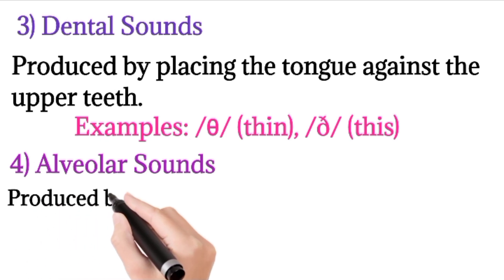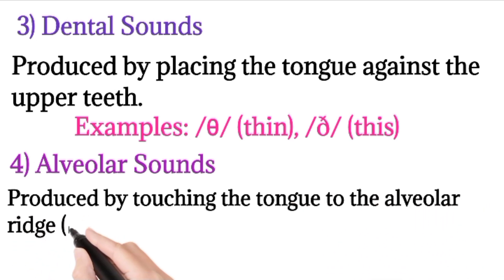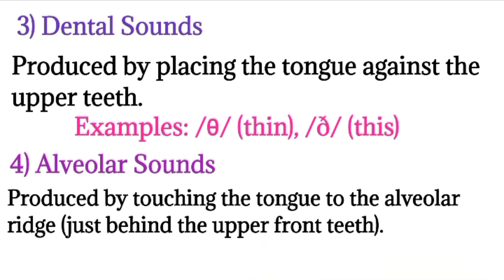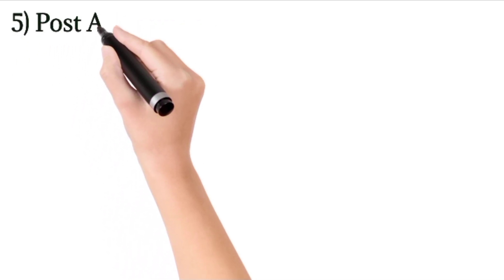The fourth place is alveolar sounds. Alveolar sounds are produced whenever the tongue touches the alveolar ridge, which is just behind the upper teeth. The area just behind the upper teeth is the alveolar region. These are sounds produced whenever the tongue is touching the alveolar ridge.